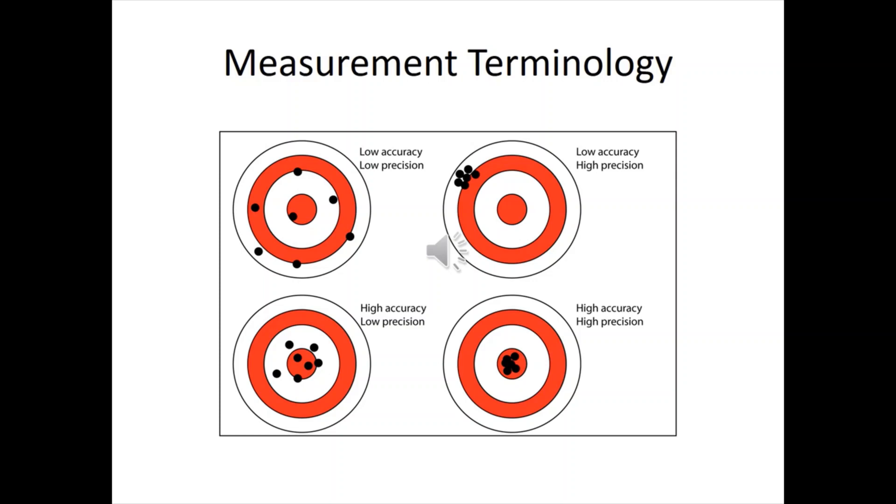And if you look at the lower left corner, you see high accuracy, low precision. It's bouncing all around the bullseye, but it's not very tight. And you can make up for this thing. Think of the central limit theorem here, how we might be able to use this.